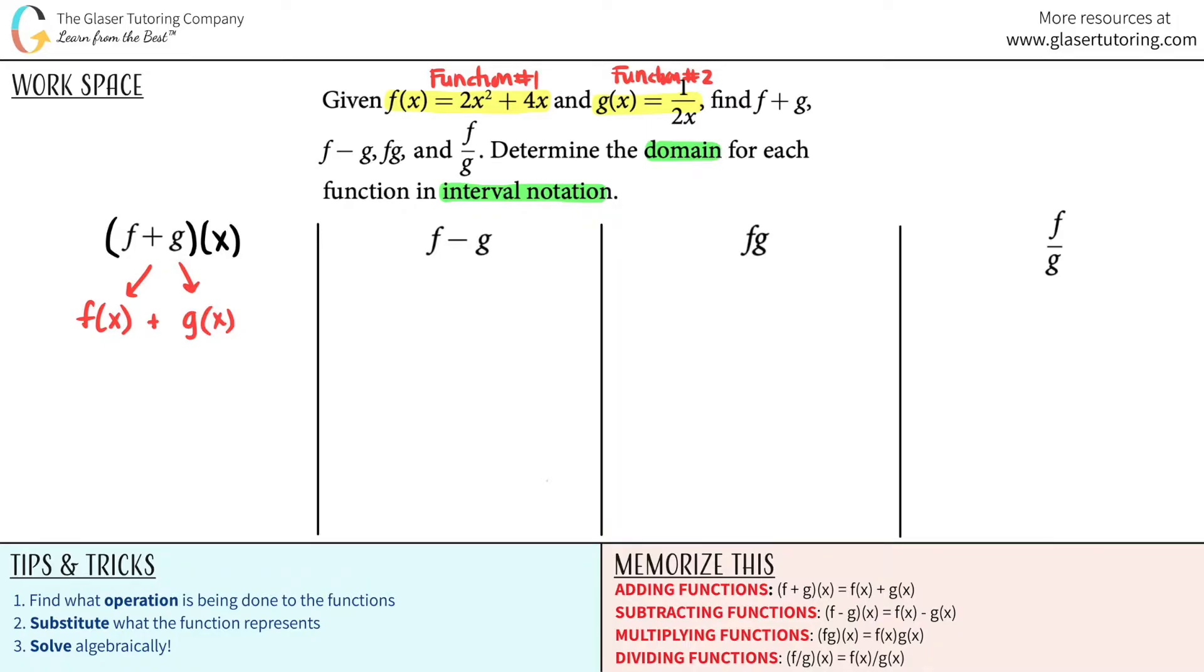Now all you got to do is just substitute. Find the operation, literally addition, subtraction, multiplying, and dividing is being done. Substitute for what the function represents, and then all we got to do is solve. So what was f of x? f of x was this one. So 2x squared plus 4x, adding with the other one. g of x was 1 over 2x.